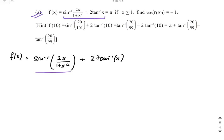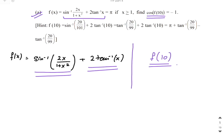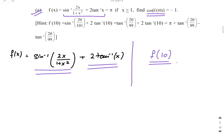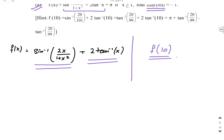f(x) = sin⁻¹(2x/(1+x²)) + 2tan⁻¹(x) is the value of f(x), and we need to find cos(f(10)). Basically, the goal is to first find f(10). Now, I know the definition of sin⁻¹(2x/(1+x²)). The range is from -1 to 1.